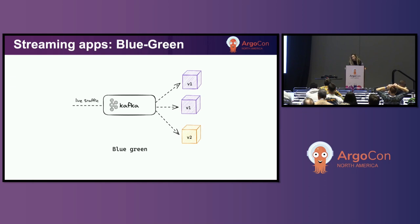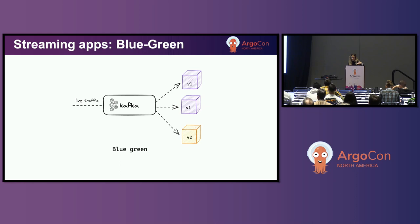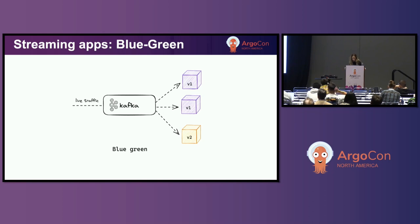If I intentionally change the consumer group, then I will not be able to promote my V2 application anymore, because the whole idea with blue-green is to be able to promote a new version to become the stable one. But if it has a different configuration than the stable one, I cannot promote it. So because blue-green is all about bringing up new instances and testing them without receiving any live traffic, there's no fit here.